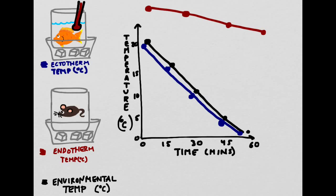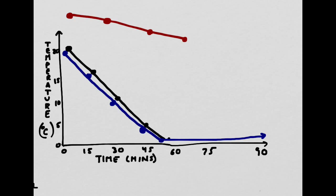The body of the mouse would work much harder in order to maintain the optimal temperature. If we were to extend this graph for a little bit longer, we would notice that the temperature of the fish would continue to stay the same as the environment, and the fish would still be fine.